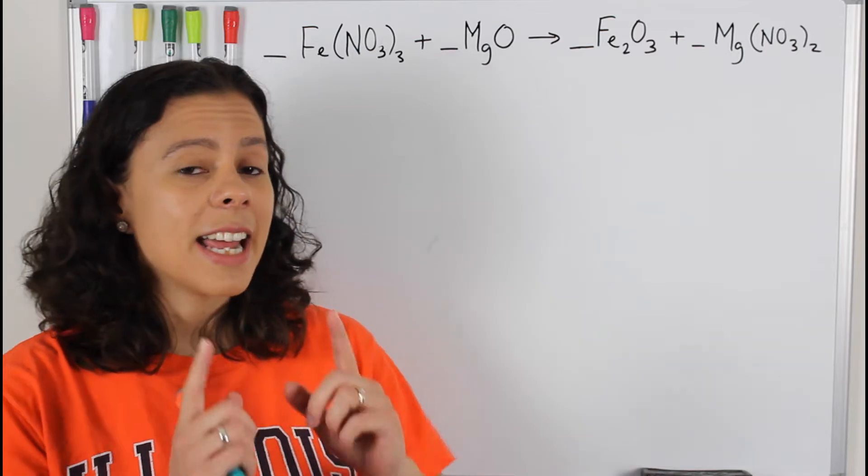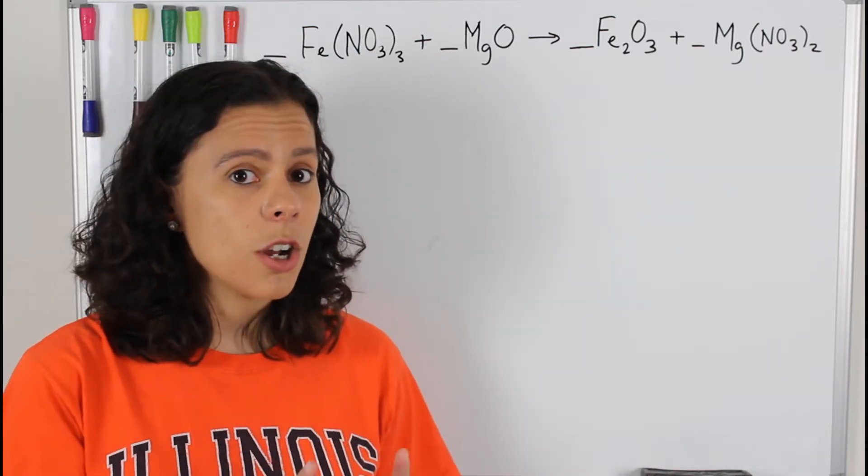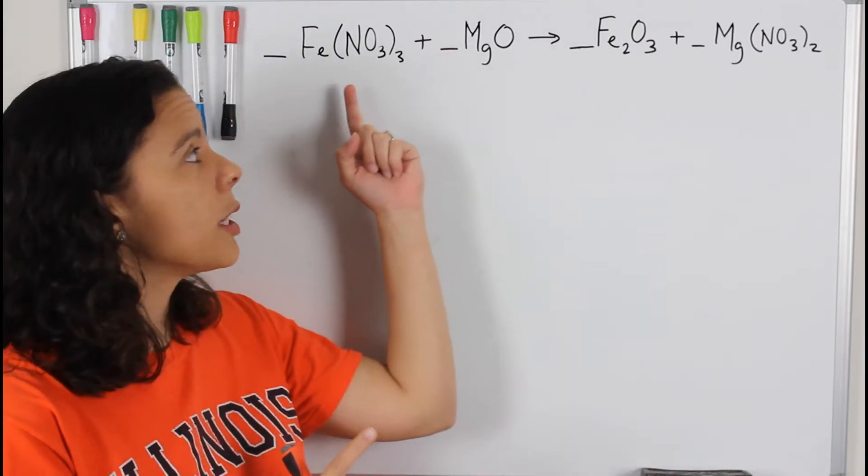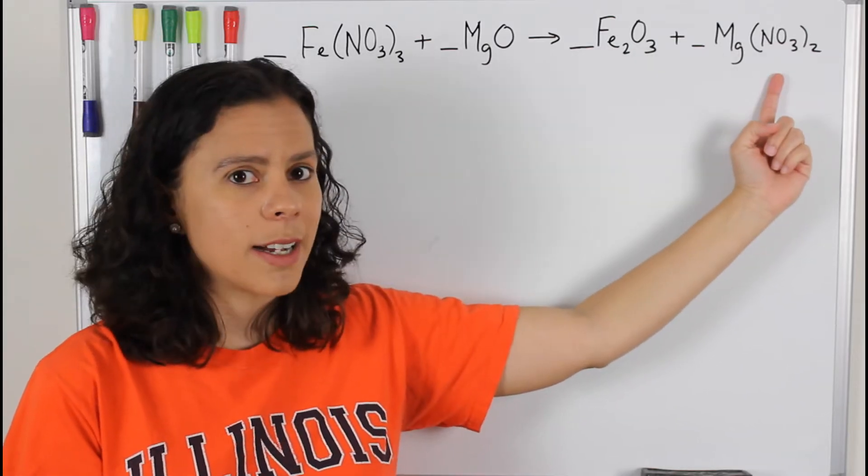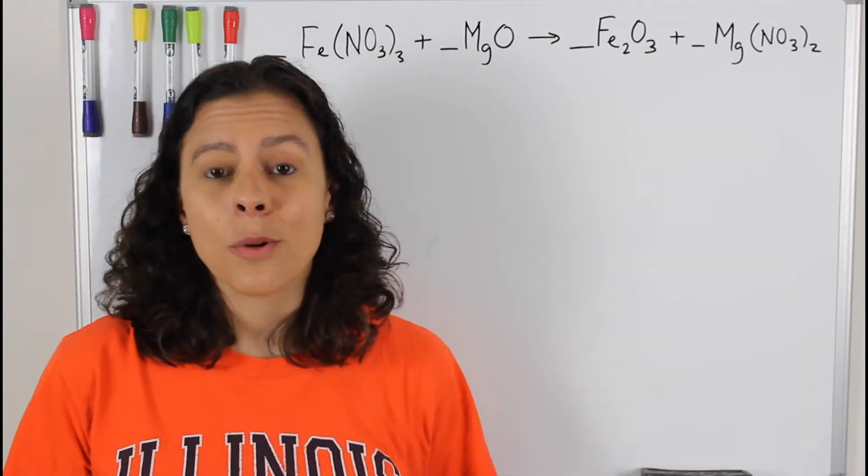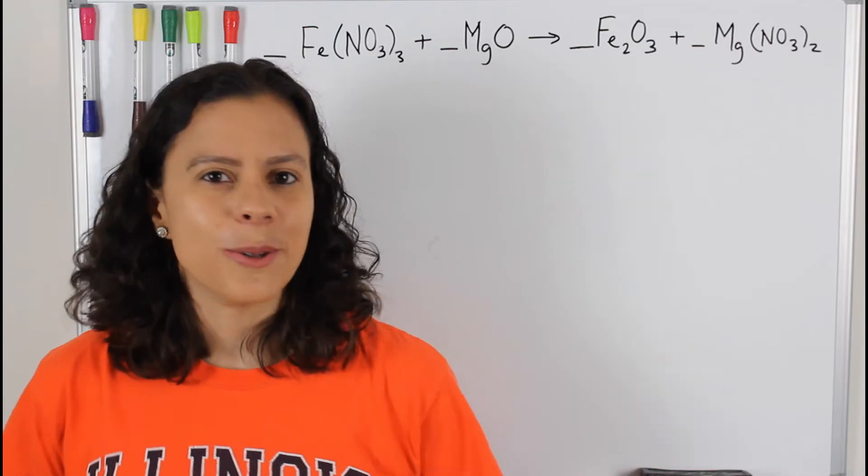and that is that if the polyatomic ion is conserved, meaning that you have it both in the reactants and in the products, then we can write it as if it was one element. Let's do it.